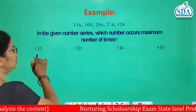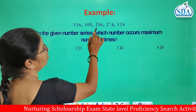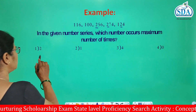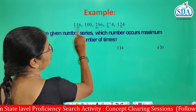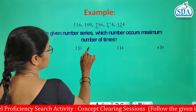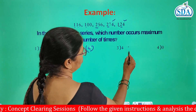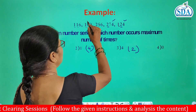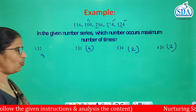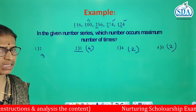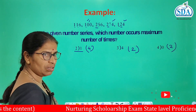Looking at the options: number two occurs one, two, three times; number one occurs one, two, three, four times; number four occurs one and two times; number zero occurs one and two times. So our answer is option number two — that is, number one occurs the maximum number of times, which is four.